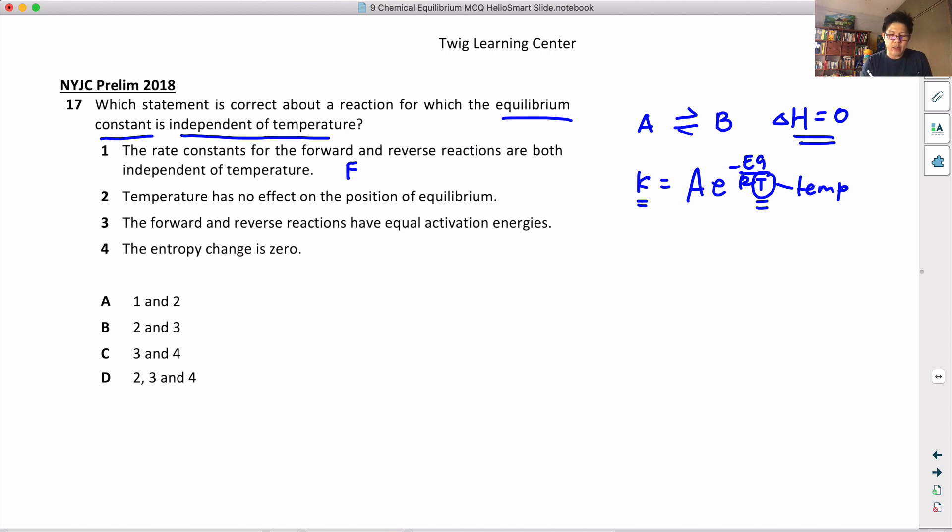The forward and reverse reactions have equal activation energy. So how do you draw a graph? Energy profile where change in H is zero. So if that's the case - energy, and I call this progress of reaction.